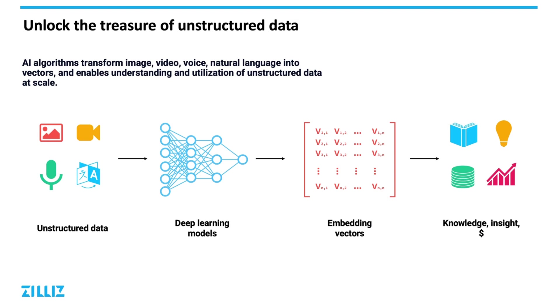Semi-structured data is similar. It usually comes in the form of textual information that adheres to a specific format. Some examples of semi-structured data are system logs, JSONs, and XML files.